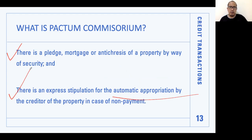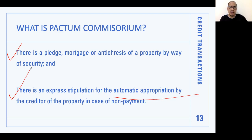What is rendered void is only the Pactum Commissorium stipulation — not the pledge, the mortgage, the antichresis, or the loan. Those remain valid. The automatic appropriation is what is prohibited. When the debtor cannot pay, the creditor must undergo the process of foreclosure: the property subject of the pledge or mortgage must be sold in a public auction, and from the proceeds the creditor collects what is owed. You cannot simply say 'since you cannot pay, the property automatically becomes mine — let's skip the public auction.' That kind of stipulation is null and void. The elements of Pactum Commissorium are: (1) there is a pledge, mortgage, or antichresis of property serving as security; and (2) there is an express stipulation for automatic appropriation by the creditor in case of non-payment.